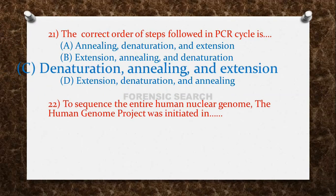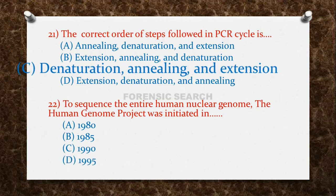The next question: to sequence the entire human nuclear genome, the Human Genome Project was initiated in — Option A: 1980. Option B: 1985. Option C: 1990. Option D: 1995. The correct answer is option C — in 1990, the Human Genome Project was initiated.